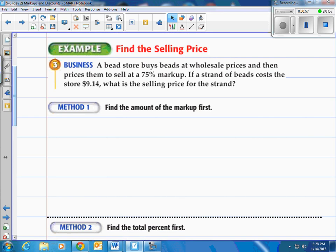So our first example, it says a bead store buys beads at wholesale prices and then prices them to sell at a 75% markup. If a strand of beads costs the store $9.14, that's what they bought the beads for themselves, that's called the wholesale price. What is the selling price for the strand? Well, we have to add on 75% of that.